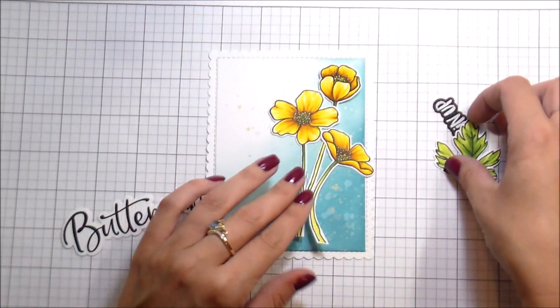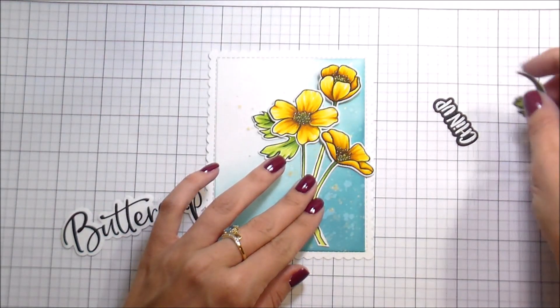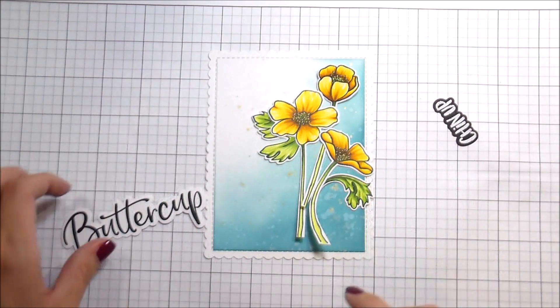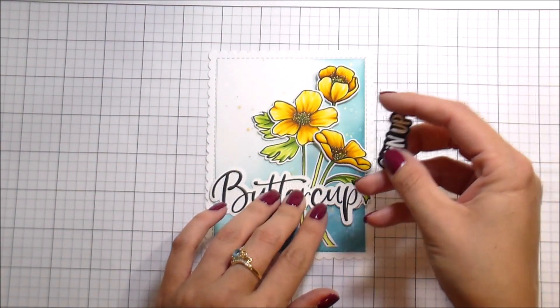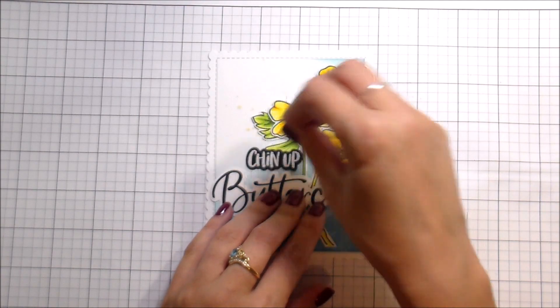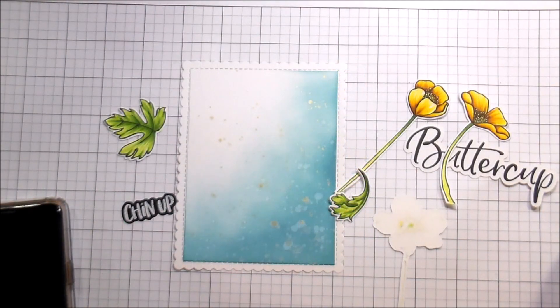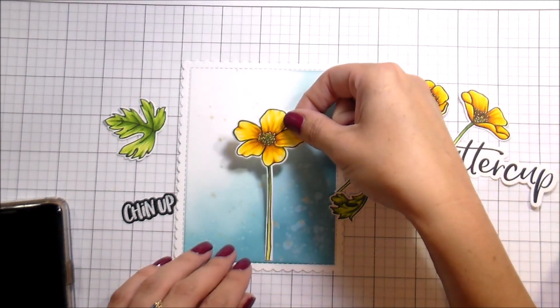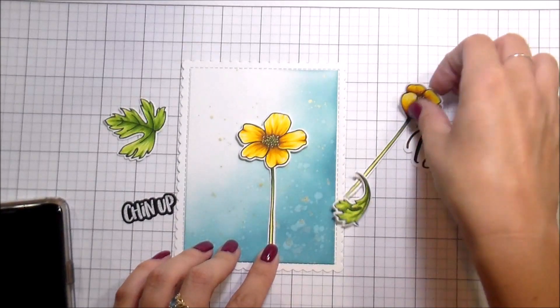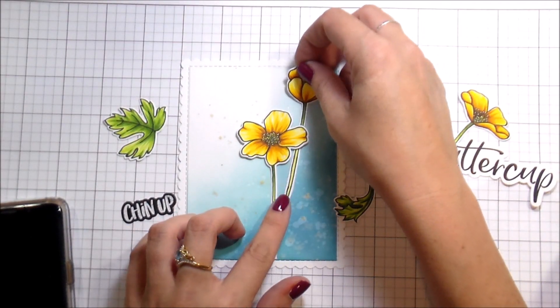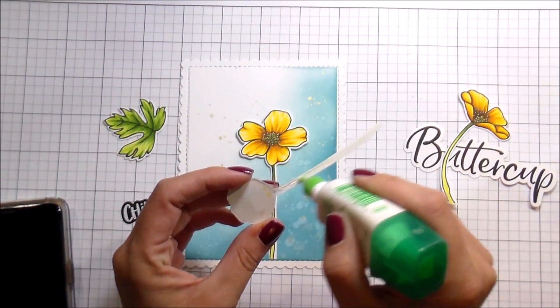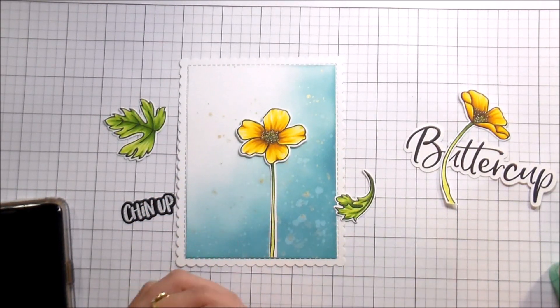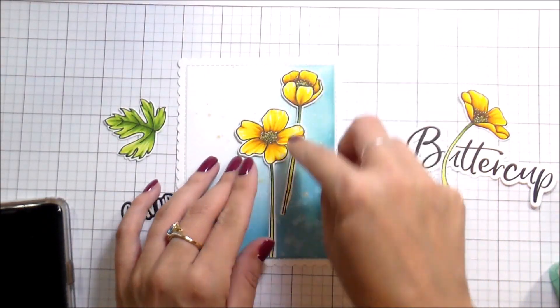The background was cut slightly smaller than the actual scallop frame and then I just glued that in place. I'm getting my placement together for these flowers. This buttercup script is pretty large - it does fit on a card size either vertical or horizontal, but I wanted to make sure it wasn't overhanging too much of that scallop. Once I got everything in place, you can see my phone's off to the left hand side - I actually took a picture of where I wanted the flowers to be so that I could refer to it.